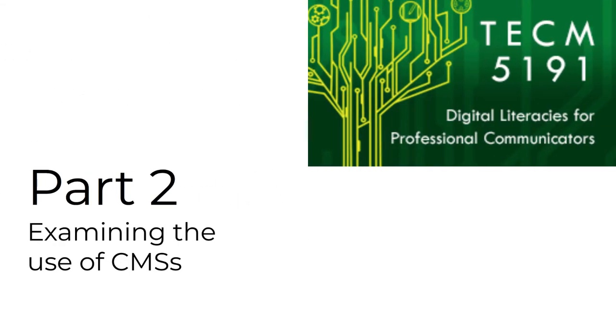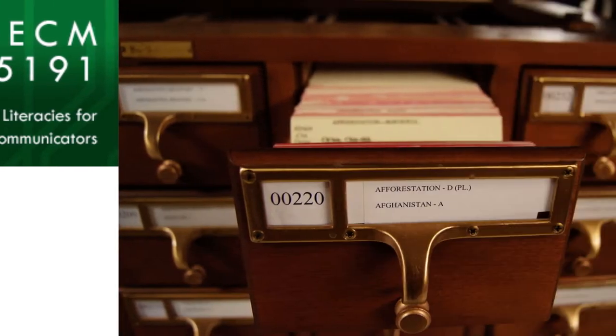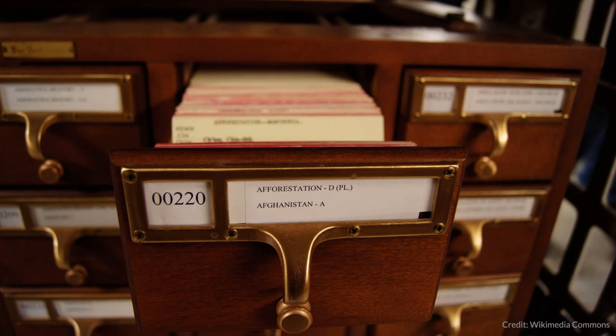Now that you have a somewhat better idea of what web design is, let's examine the use of content management systems, or CMSs, for creating websites in Part 2 of the lecture. A CMS allows multiple contributors to create, edit, and publish content on the web. It's common to note that the first content management systems were actually libraries and their card catalogs. Each card contained information about a piece of content — a book, article, photo, or whatever. In the 1990s, when content was being loaded onto the World Wide Web, people needed something like the card catalog to manage it.